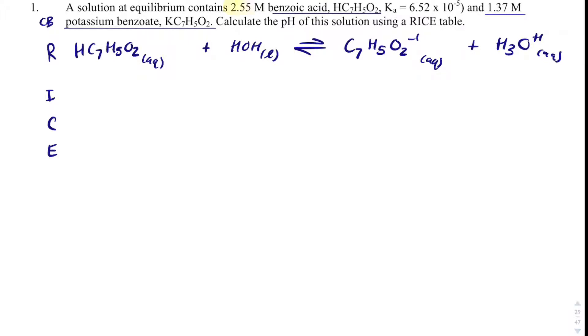The initial concentration of benzoic acid is 2.55 molar. Water is, of course, just nothing because pure liquids do not affect your equilibrium concentration. Benzoate is 1.37 molar, and then hydronium is 0, so we have got to shift right.